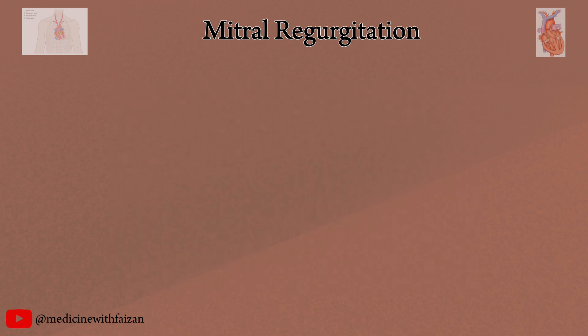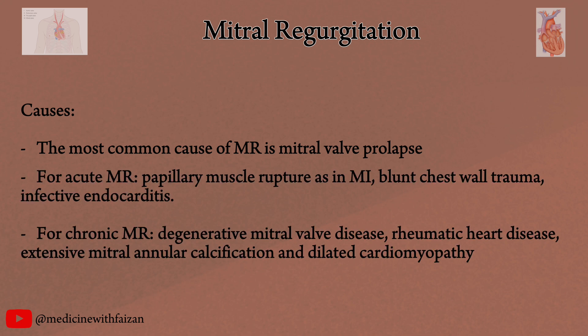The most common cause of mitral regurgitation is mitral valve prolapse. Causes of acute MR include papillary muscle rupture as in myocardial infarction, blunt chest trauma, and infective endocarditis. Causes of chronic MR include degenerative mitral valve disease, rheumatic heart disease, extensive mitral annular calcification, and dilated cardiomyopathy.